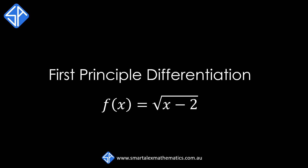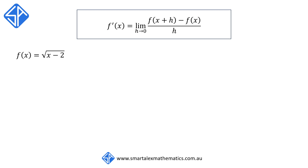In this video we're going to be looking at another example on how to differentiate using first principles. The function we're looking at this time is the square root function f of x is equal to the square root of x minus 2. To differentiate from first principles we're going to need to use the definition: f dash x is equal to the limit as h approaches 0 of f of x plus h minus f of x, divided by h.